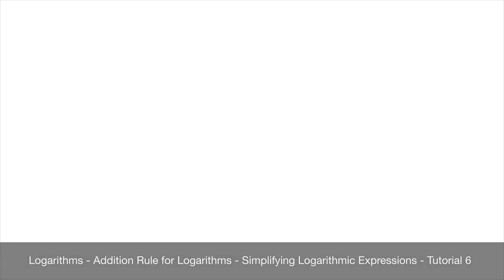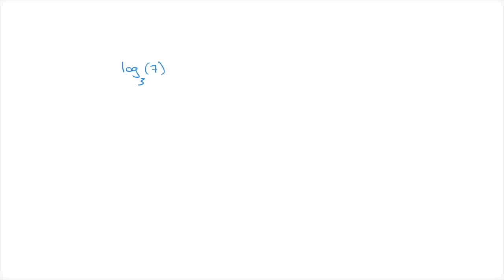We now learn about the addition rule for logarithms, which allows us to simplify logarithmic expressions. For instance, let's say we were given log base 3 of 7 plus log base 3 of 5. What the addition rule for logarithms lets us do is rewrite this sum of two logarithms as a single logarithm, and it would be the following: this would equal log base 3 of 7 times 5.